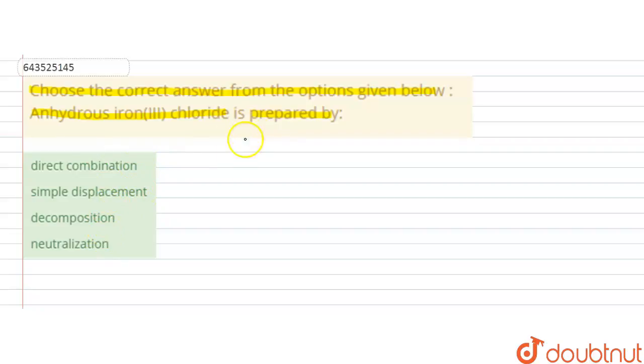So anhydrous iron(III) chloride, that is FeCl3, is prepared by passing dry chlorine gas over iron metal.